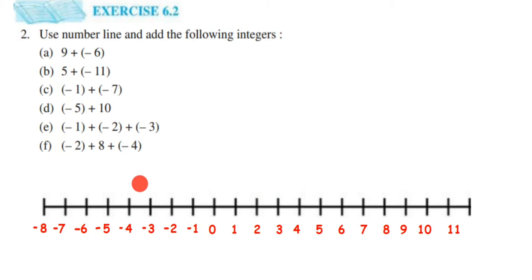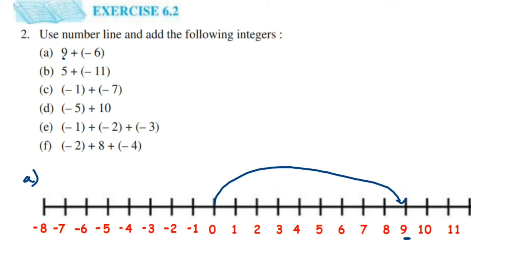Now we are going to start with the first question: 9 plus minus 6. We have to start from 0. 9 is a positive integer, so we go towards the right hand side — directly to 9. Now we reach 9. Next it's plus minus 6. Minus 6 is a negative integer, so we move towards the left hand side — 6 steps. We are getting to 3. So 9 plus minus 6 is equal to 3.